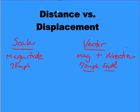So now how does that set up with distance and displacement? Distance is a scalar quantity. All we care about is where you go, how far you go. Vector quantity would be displacement.